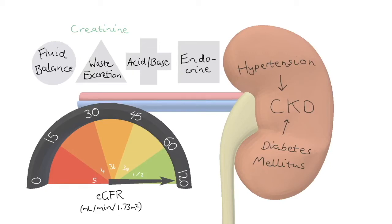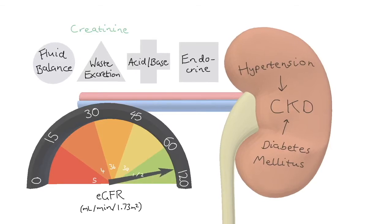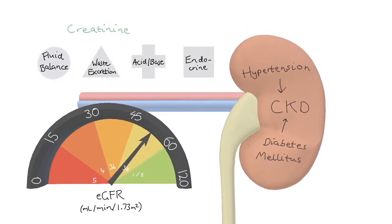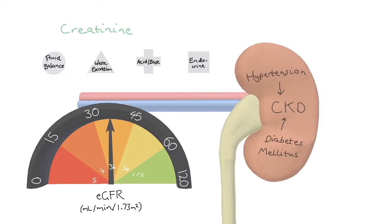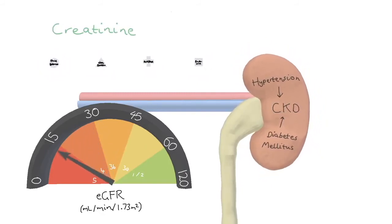The rate that your glomeruli can filter, your GFR, decreases as you age. Over the age of 40, your GFR decreases at a rate of 1 mL per minute per year.